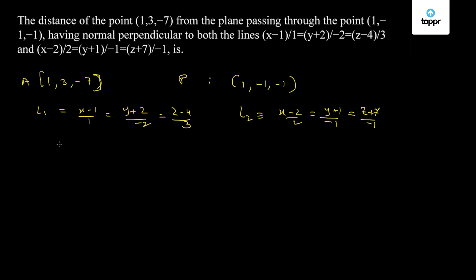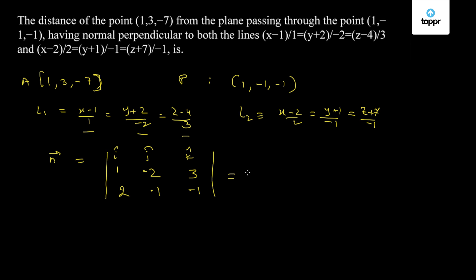The direction of the normal can be obtained by the cross product of the directions of these lines. The normal vector n-bar can be obtained using the determinant with i-cap, j-cap, k-cap. L1 has direction components 1, -2, 3 and L2 has direction components 2, -1, -1. This cross product comes out to be equal to 5i-cap plus 7j-cap plus 3k-cap.